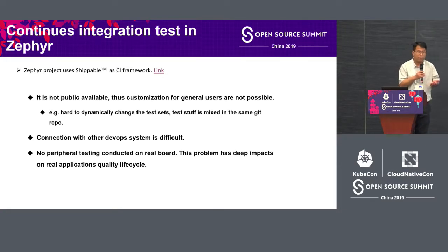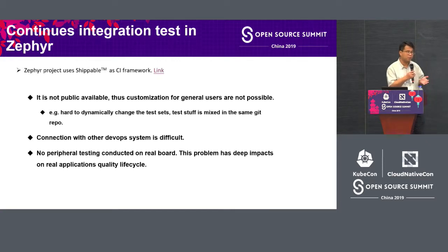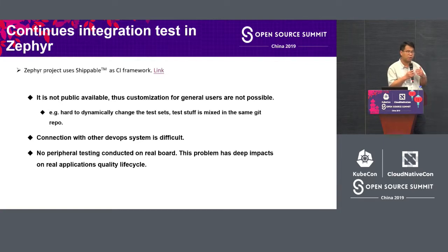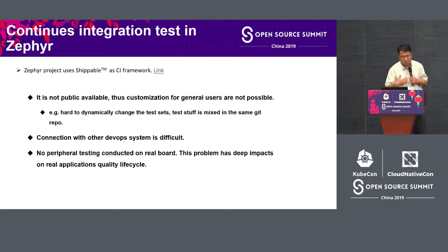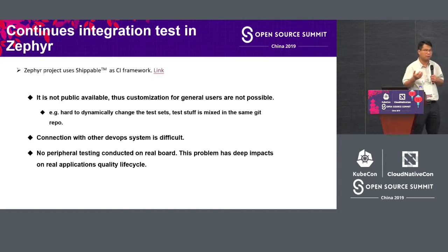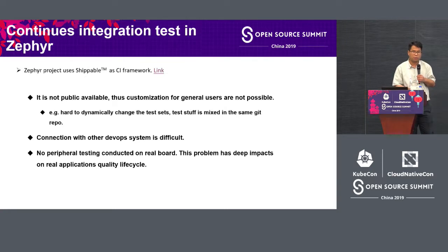A lot of the test scripts and test content will be mixed in the same Git repo. This is not allowed because when we release a patch to customers, we do not want to expose the underlying layers or unnecessary content. Test code quality is also not very good. Since it is a commercial version, connecting a DevOps architecture to it will cause troubles, even with company support.